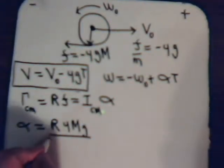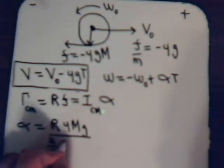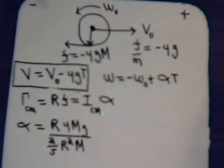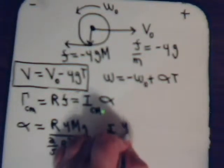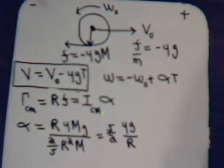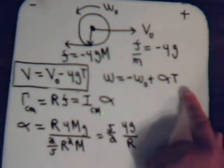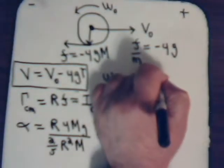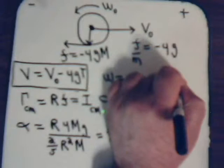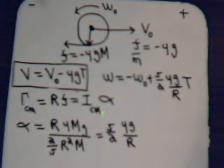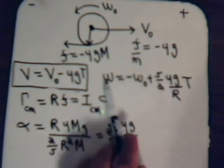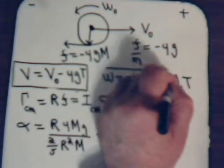Remember that torque also equals the moment of inertia about the center of mass times the angular acceleration. Even though F is negative, dividing the positive torque by the moment of inertia gives a positive angular acceleration. This equals R times mu*m*g divided by the moment of inertia. For a sphere, that's two-fifths R-squared M, so the M's and one R cancel, giving angular acceleration alpha equals five-halves times mu*g divided by R. So omega equals negative omega-naught plus five-halves times mu*g over R times T.